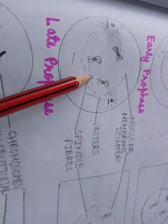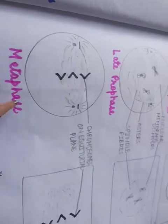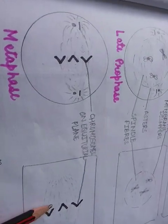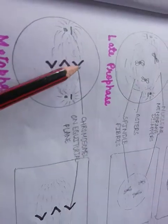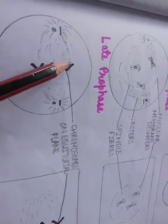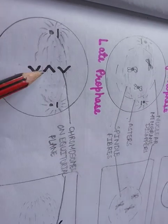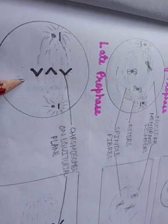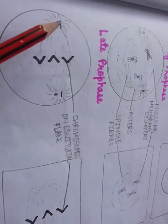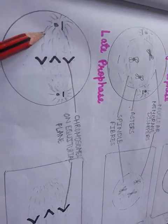In prophase, the chromosomes are moving towards the equator. In the next stage, metaphase, for both animal and plant cells, the chromosomes are lined up on the equatorial plane. You can see here they are lined at the equatorial plane and are at equal distances from both poles.